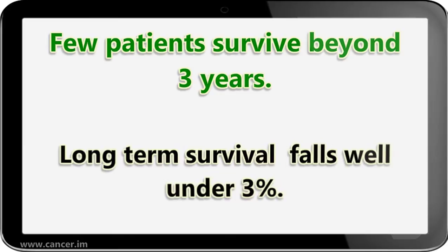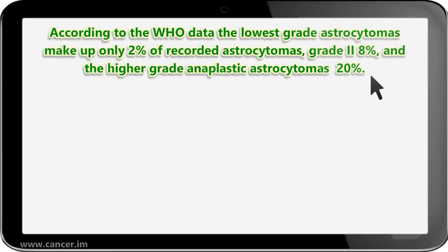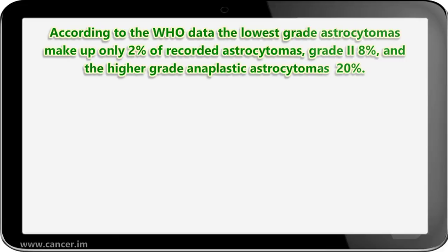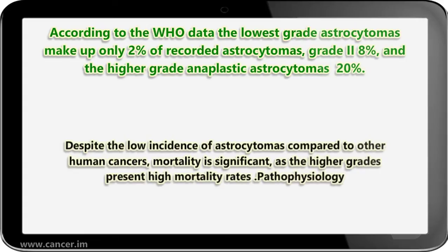Long-term survival falls well under 3%. According to the WHO data, the lowest-grade astrocytomas make up only 2% of recorded astrocytomas, grade II accounts for 8%, and the higher-grade anaplastic astrocytomas 20%. The highest-graded astrocytoma is the most common primary nervous system cancer and the second most frequent brain tumor after brain metastasis. Despite the low incidence of astrocytomas compared to other human cancers, mortality is significant, as the higher grades present high mortality rates.